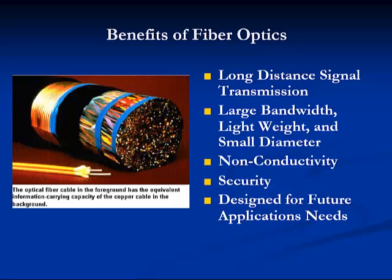Now let's take a quick look at optical fiber cable, especially the benefits compared to copper. Two strands of fiber — one for transmission and one for receiving — typically carry 20,000 two-way voice conversations in the long-haul PSTN network, which is equivalent to about 50 400-pair copper cables. Other features of fiber compared to copper include long-distance signal transmission, large bandwidth, light weight and smaller diameter, non-conductivity, security, and they can be designed for future application needs.